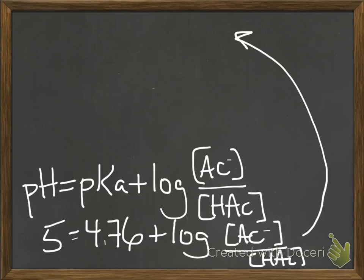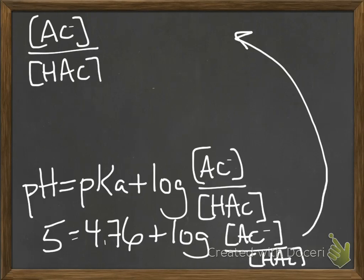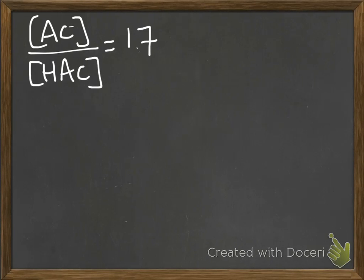So if you take that equation and you solve for the ratio of acetate to acetic acid, you end up getting 1.7. So at this point, you could actually go two different directions in the way you solve it, but you'll get the same answer. So first I'll do the way that is similar to what we did in class.